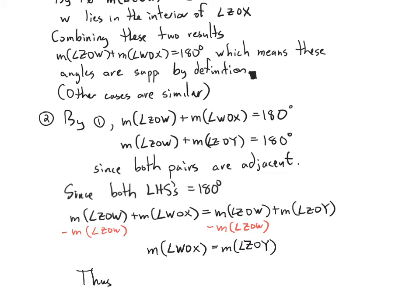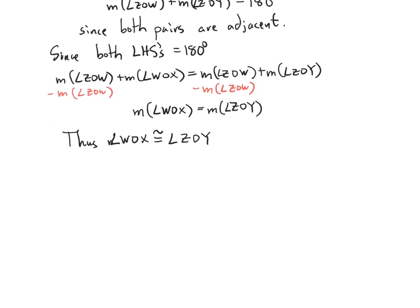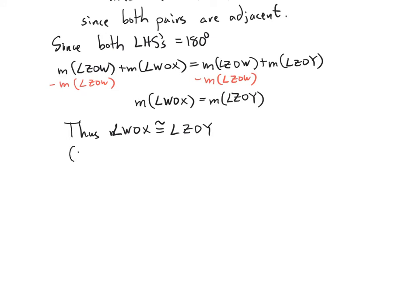Thus, angles WOX and ZOY are indeed congruent, which is what we wanted to show. The other case is similar. We put a little box at the end. So there we have it — we've proved our two results: adjacent angles are supplementary, and vertical angles are congruent.